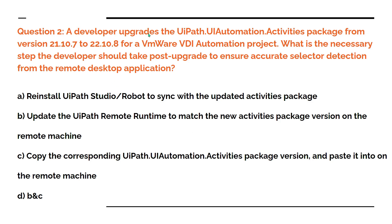Question 2: a developer upgrades the UiPath.UIAutomation.Activities package from version 21.10.7 to 22.10.8 for a VMware VDI automation project — that is a remote desktop or virtual desktop interface automation project. What is the necessary step the developer should take post-upgrade to ensure accurate selector detection from the remote desktop application?